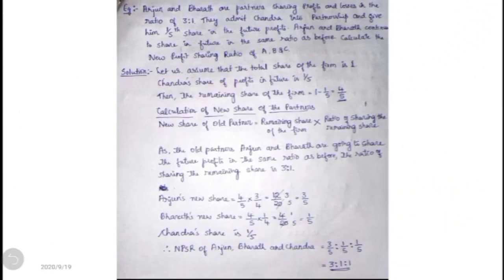Example: Arjun and Bharat are partners sharing profits and losses in the ratio of 3:1. They admit Chandra into partnership and give him one-fifth share in the future profits. Arjun and Bharat continue to share in future in the same ratio as before. Calculate the new profit sharing ratio of Arjun, Bharat and Chandra. All three informations are given here, so Case 1 is applicable.